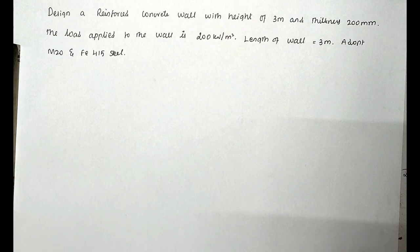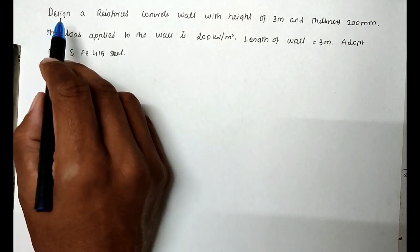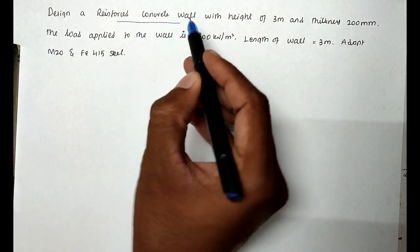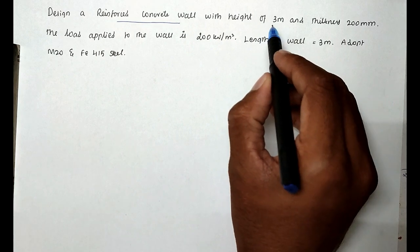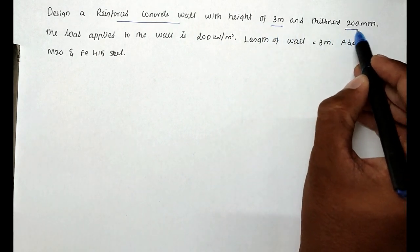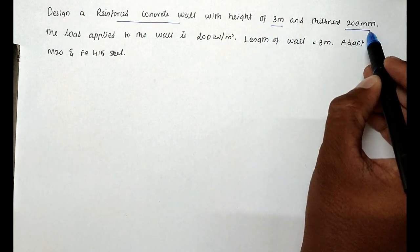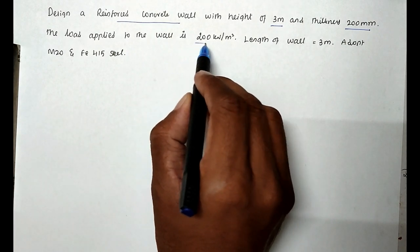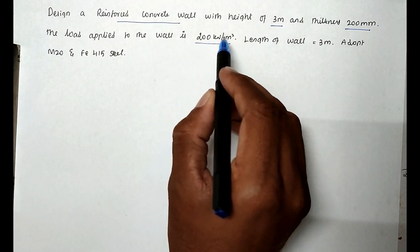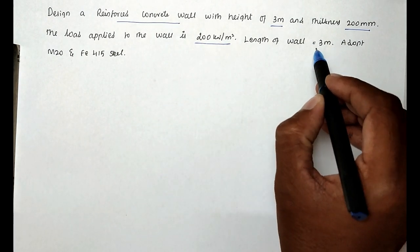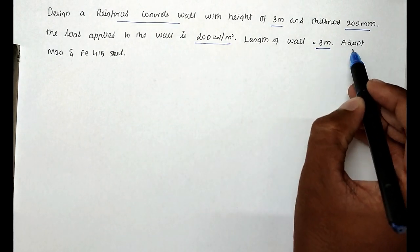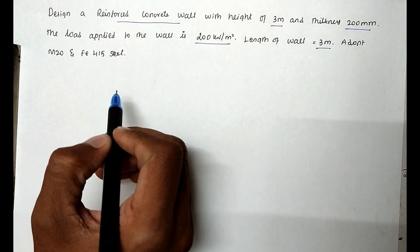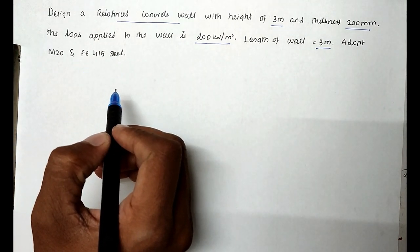That is a reinforced concrete wall. The question is: design a reinforced concrete wall with a height of 3 meters and a thickness of 200 mm. The load applied to the wall is 200 kN per meter square. The length of the wall is 3 meters, using M20 concrete and Fe415 steel.